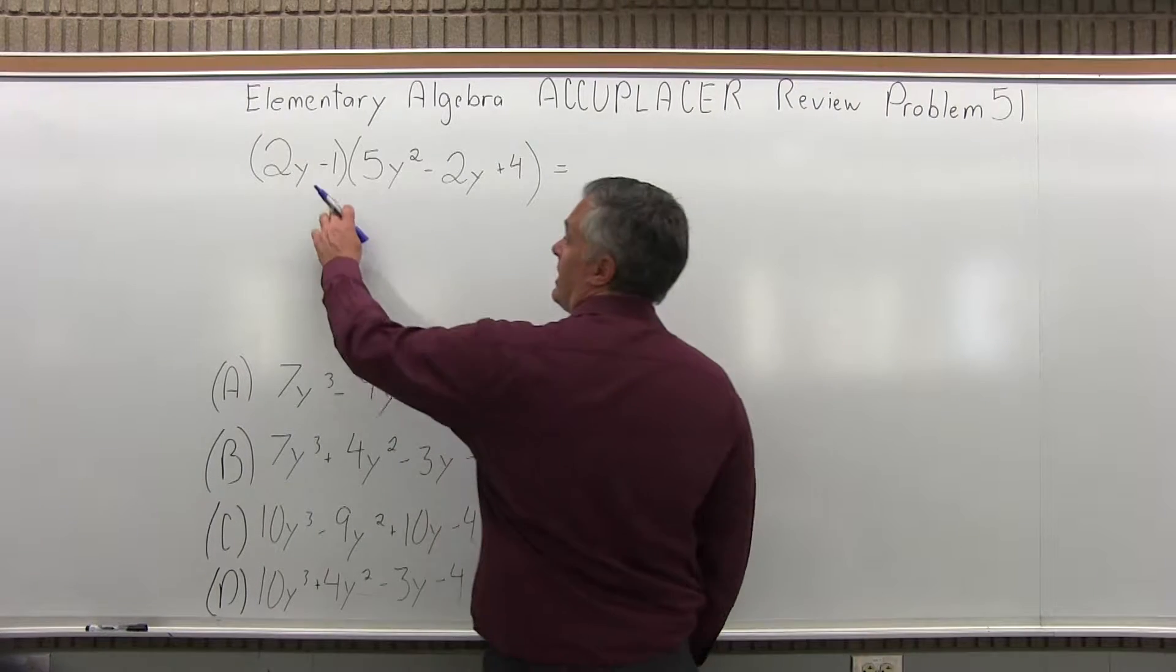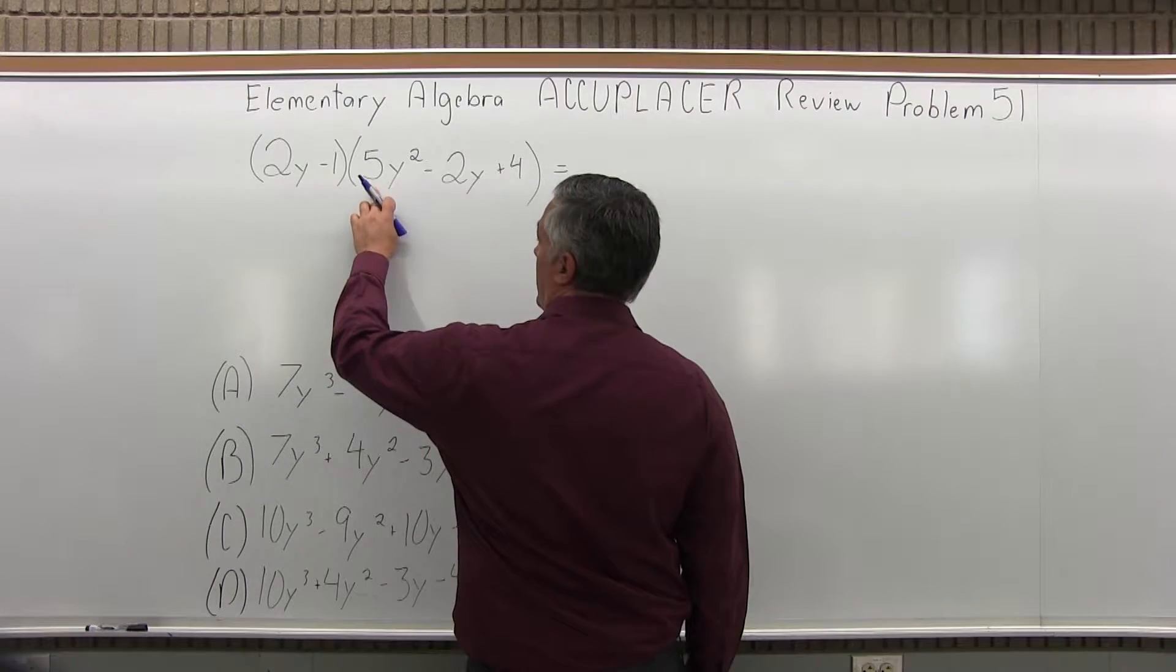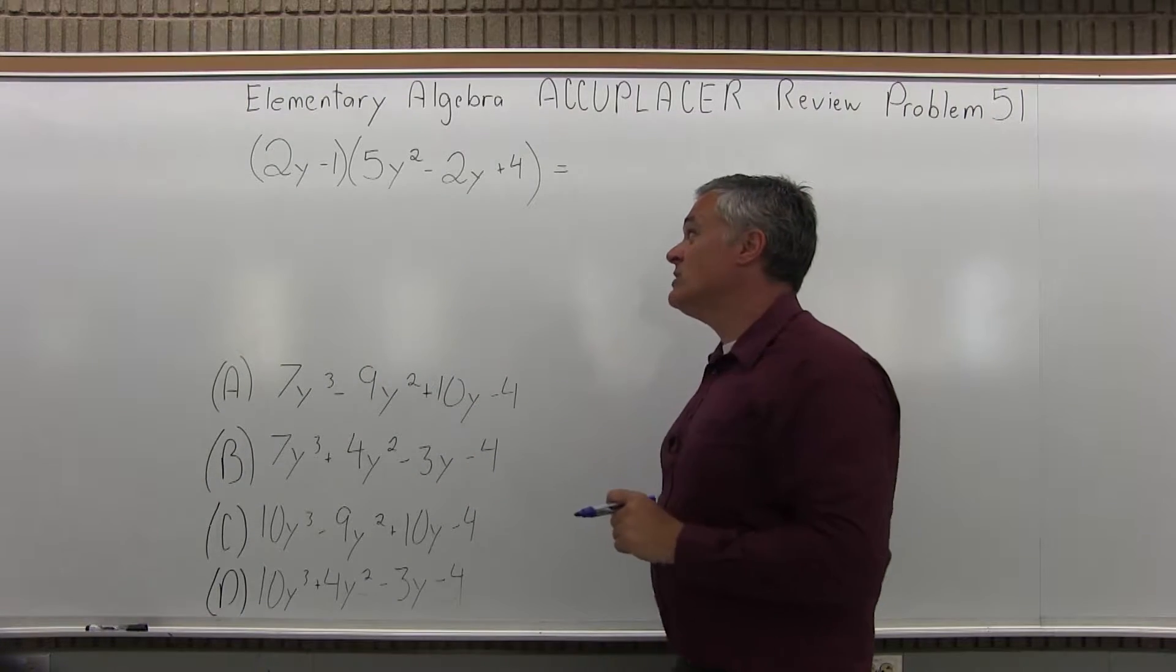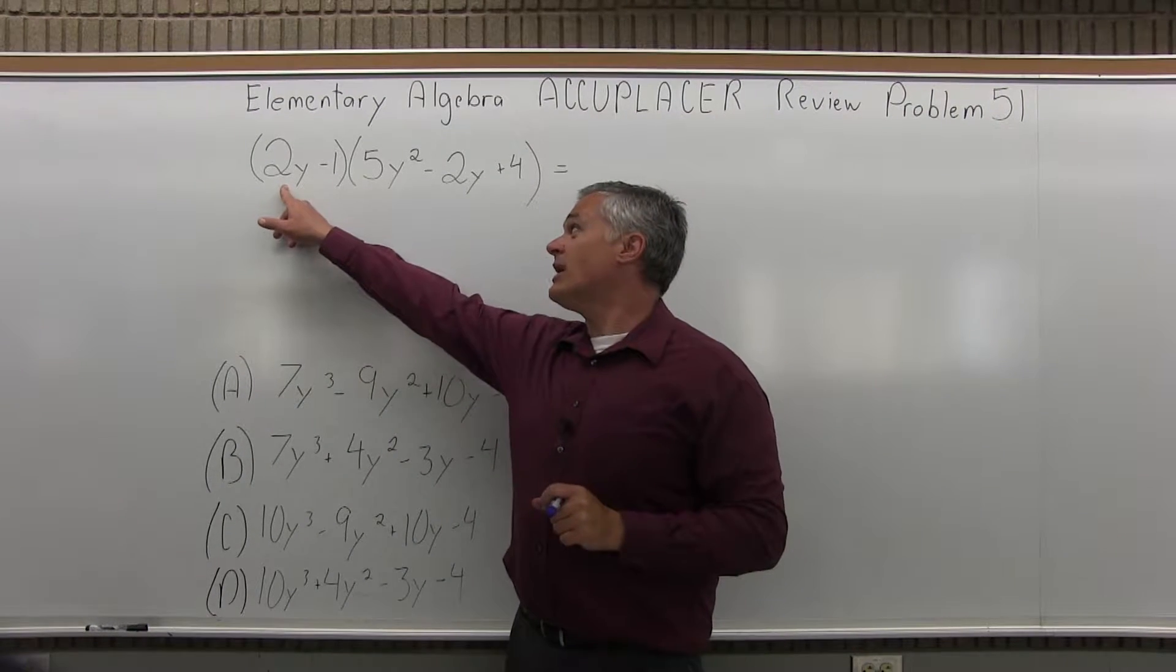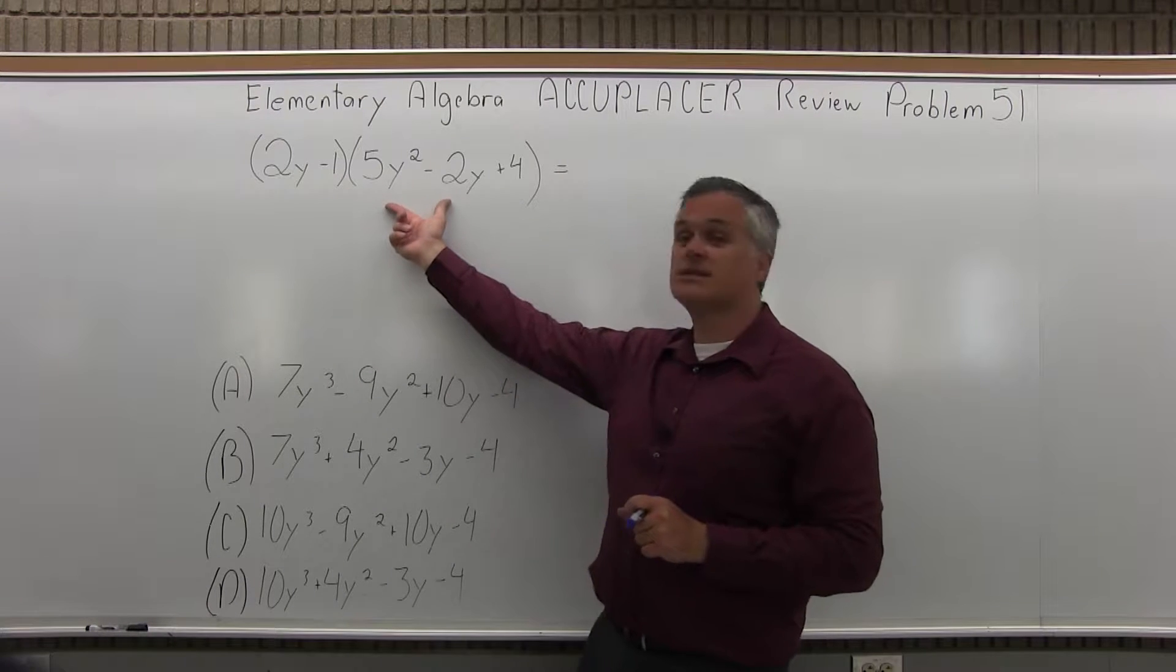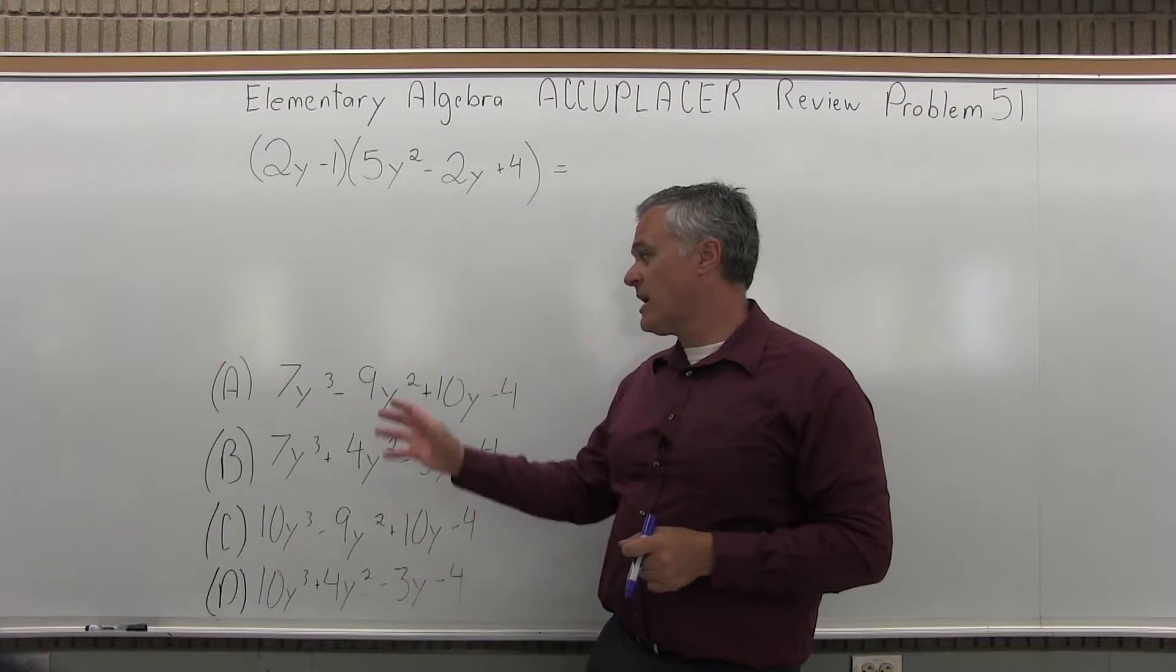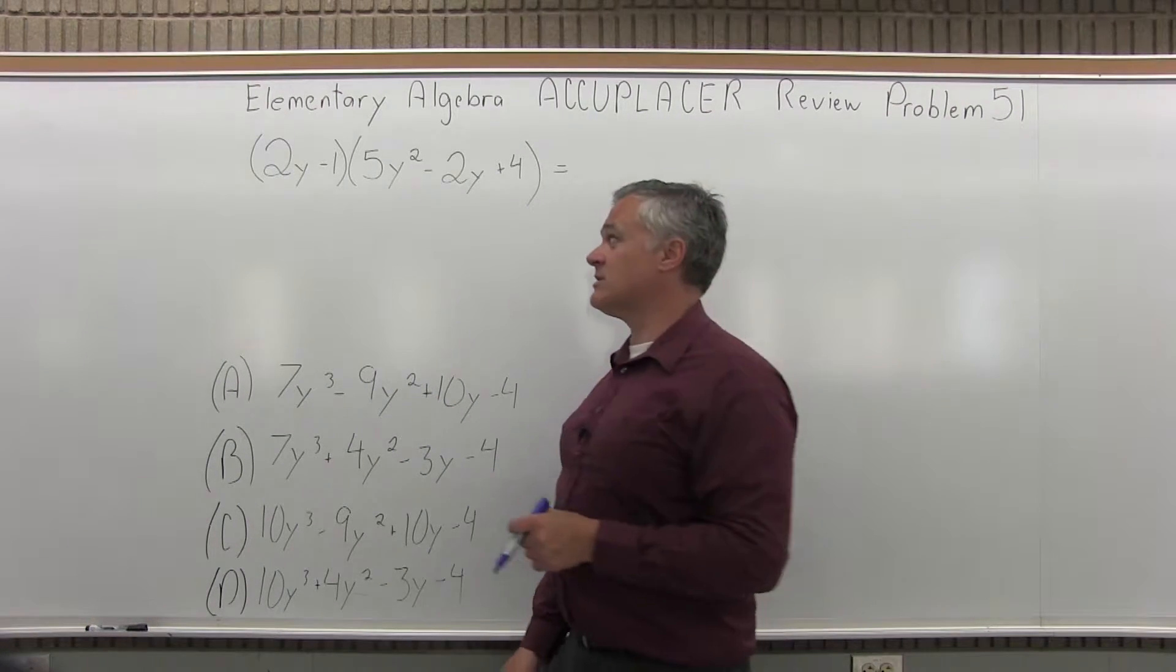We have 2y minus 1 in parentheses times 5y squared minus 2y plus 4 in parentheses. So I have to systematically multiply every item in the first set of parentheses times every item in the second set of parentheses, combine what can be combined, and see if I match one of the four available answers that are given.